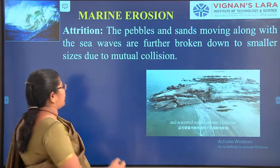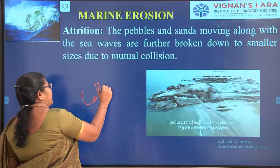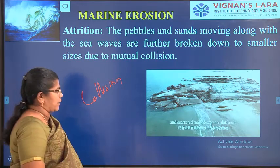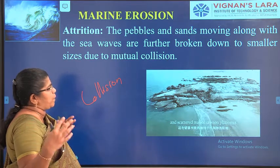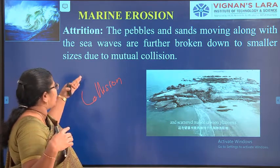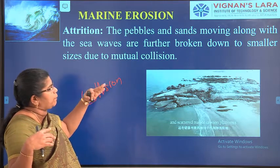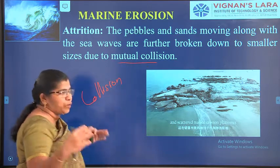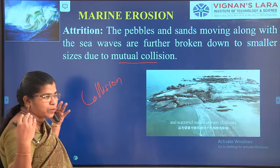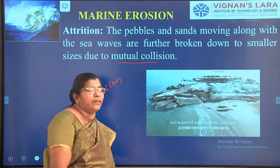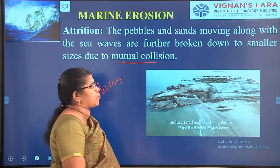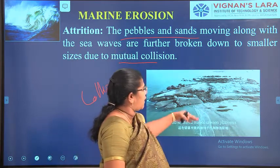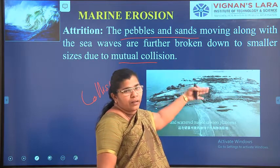Attrition is mainly collision. While abrasion is the striking of particles against rock, attrition is when pebbles and sands moving along sea waves are further broken down to smaller pieces due to mutual collision with one another, breaking down into smaller and smaller particles.